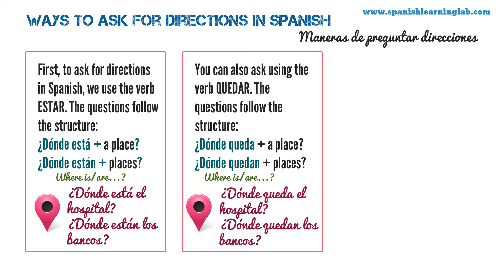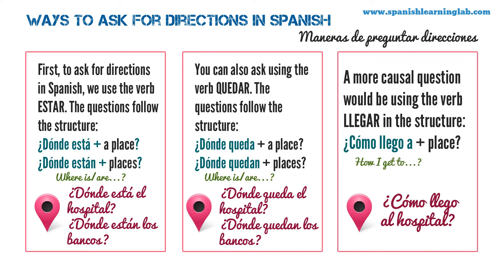The questions with quedar follow the structure: ¿Dónde queda? plus a place, or ¿Dónde quedan? plus places. For example: ¿Dónde queda el hospital? ¿Dónde quedan los bancos? A more casual way to ask would be using the verb llegar in the structure: ¿Cómo llego a? plus a place. For example: ¿Cómo llego al hospital? Let's review the three questions: ¿Dónde está?, ¿Dónde queda?, and ¿Cómo llego a?